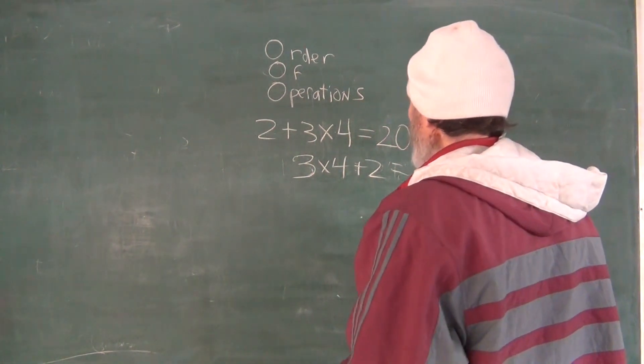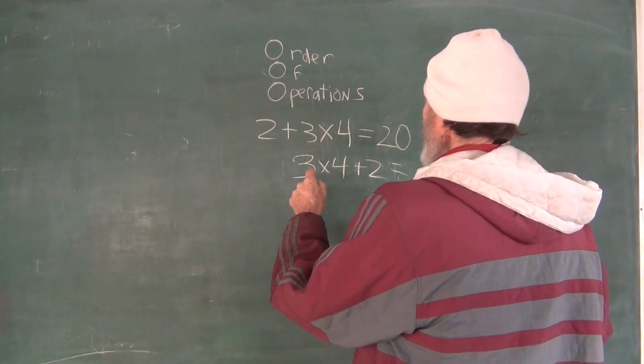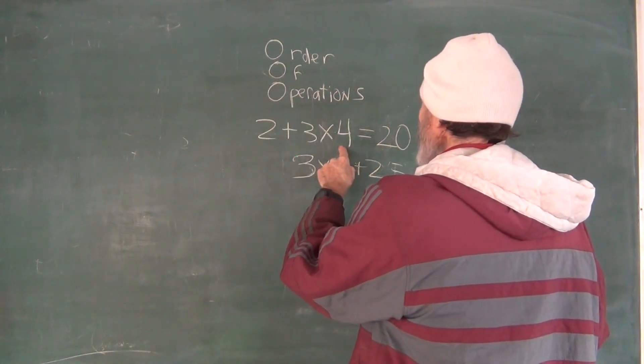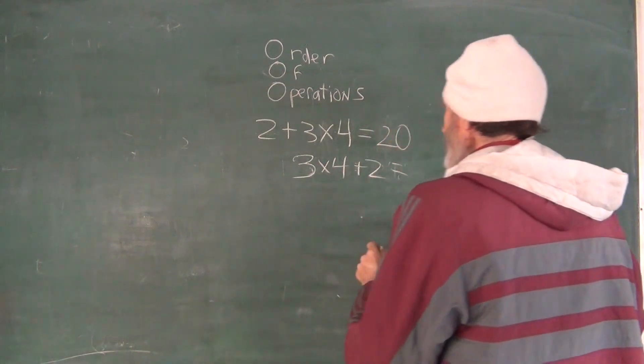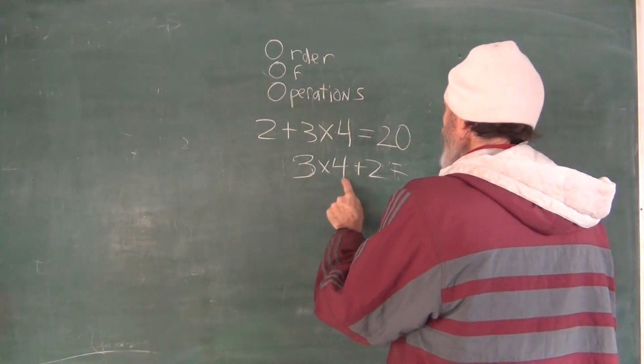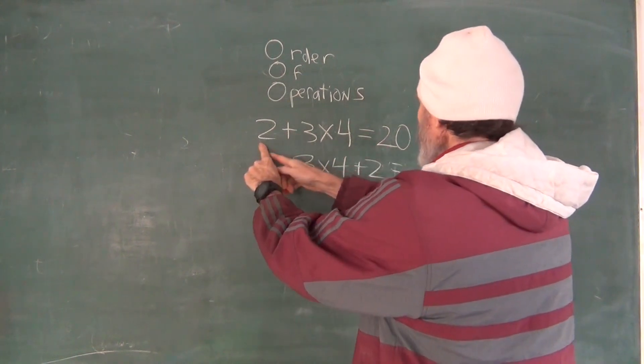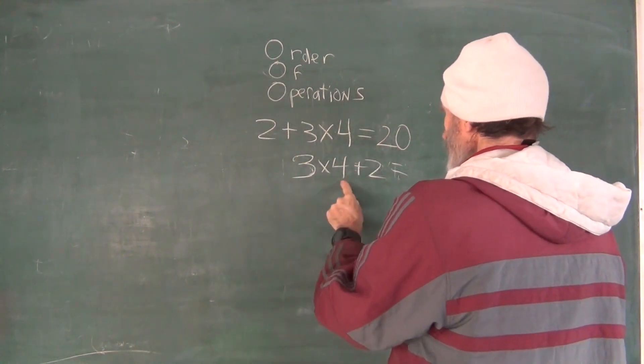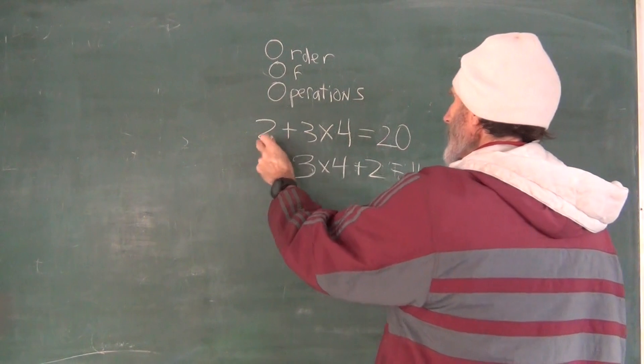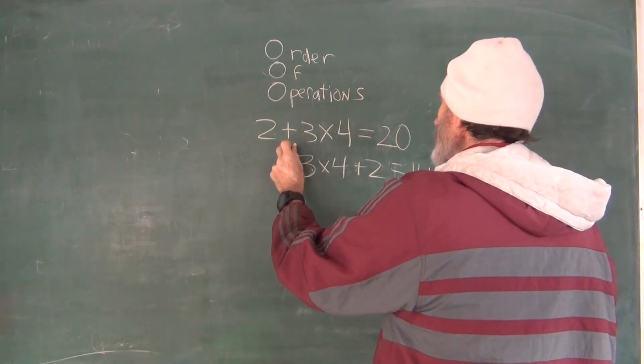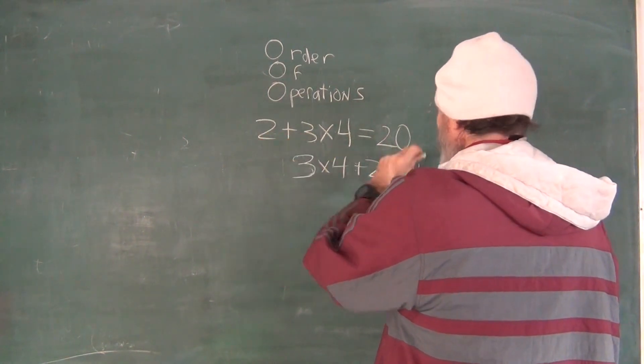But here, three times four is, oh no, that's five, okay, got you, that's the 21. So here you just do it in the order, but if you just happen to do it the other way and put the plus in front, then you don't get 14, you get two plus three, you get 20.